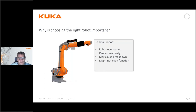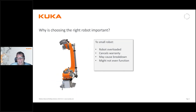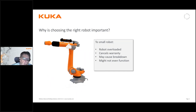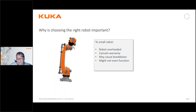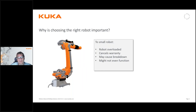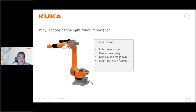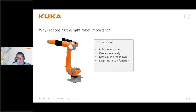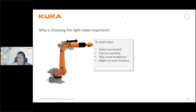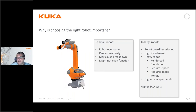If you choose a robot which is too small with too low payload, the robot will be overloaded. First of all, that actually cancels the warranty, so even if the robot practically works, it cancels the warranty. Furthermore, it may also cause a breakdown sooner than any normal application would require, or it might not even function at all — the precision and accuracy of the robot will not be able to handle the overload.